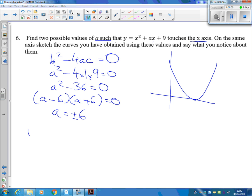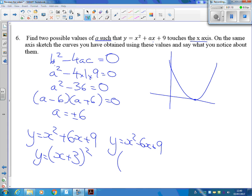There's a bit more we can do. So we've got x squared plus 6x plus 9, and so that is just x plus 3 all squared. Or we've got the minus version here, x squared minus 6x plus 9, and so this is x minus 3 all squared.